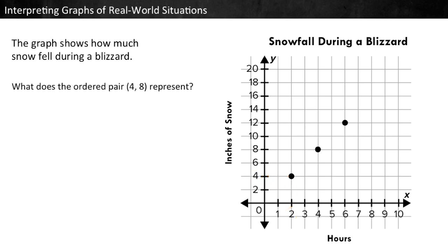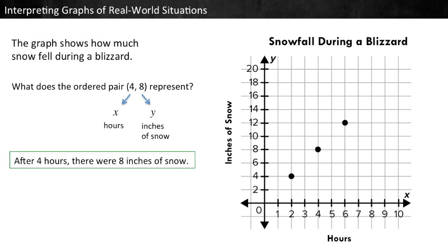What does the ordered pair represent? In an ordered pair, the first number is the x-coordinate and the second number is the y-coordinate. In this graph, x represents hours and y represents inches of snow. So the ordered pair (4, 8) means that after 4 hours, there were 8 inches of snow. You can see that on the graph, there is a point at the coordinates showing this.